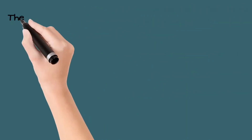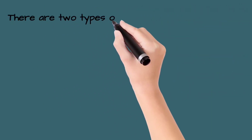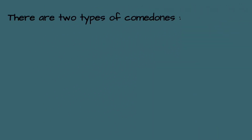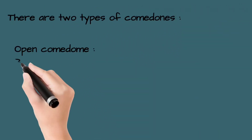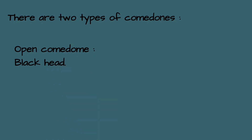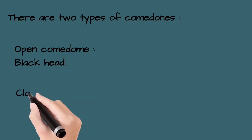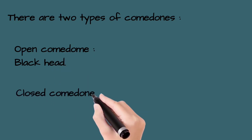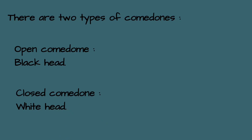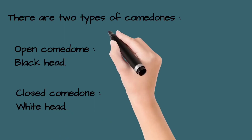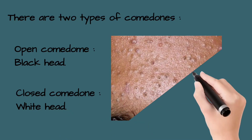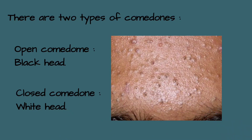There are two types of comedones. An open comedone, called a blackhead, has a keratinous plug that is black in color. A closed comedone, called a whitehead, has a plug covered by skin and appears as a white shiny papule.